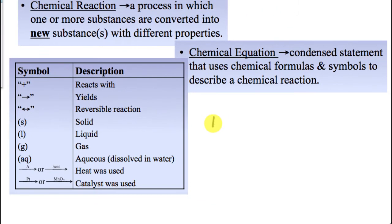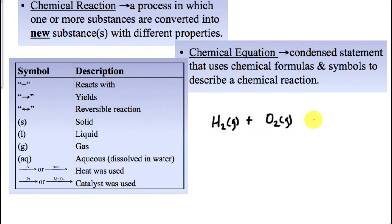For example, a very common reaction is hydrogen gas. We describe that with a chemical formula and a symbol for its state of matter. We combine that with oxygen, and we say hydrogen plus oxygen yields something. In this case, they produce water, and you indicate the state of water — liquid or gas — based on your observations in the lab.